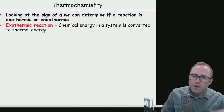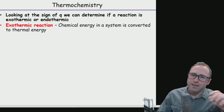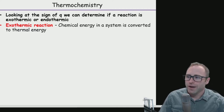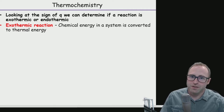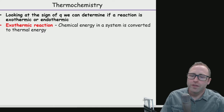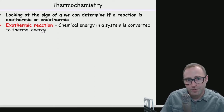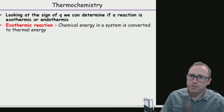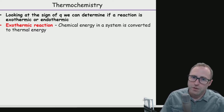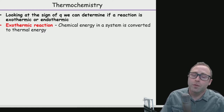By looking at Q for a chemical reaction, we can determine whether the reaction is exothermic or endothermic. These are probably terms you've heard before, but we want to make sure we have uniformly understood definitions for these.